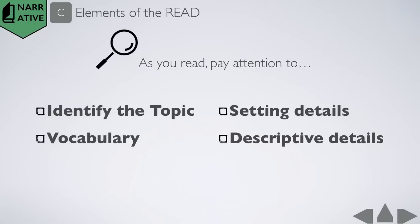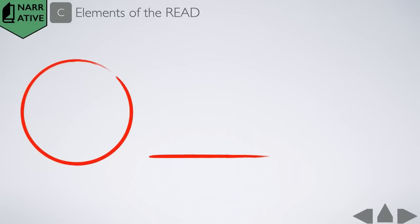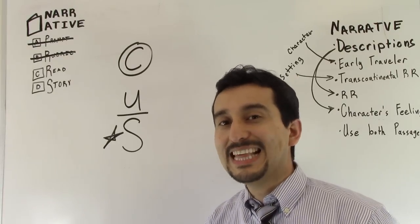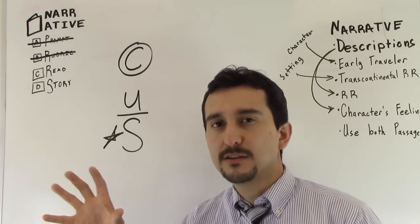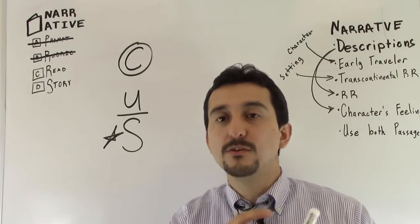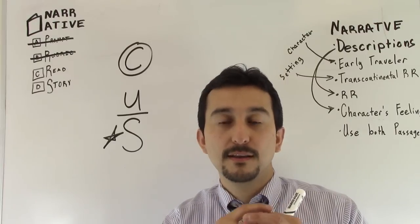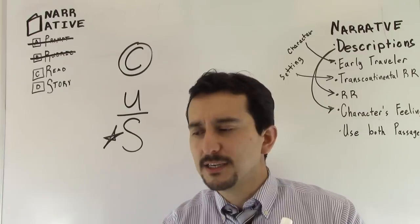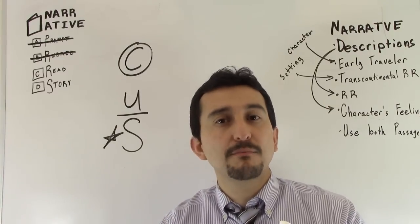We're going to go to this tried-and-true method. Always super dependable, always super easy. Circle, underline, and star. So as students read, we're going to ask them to circle, underline, and star very specific things in the passages so they can pull that out and use it when composing their own narrative.